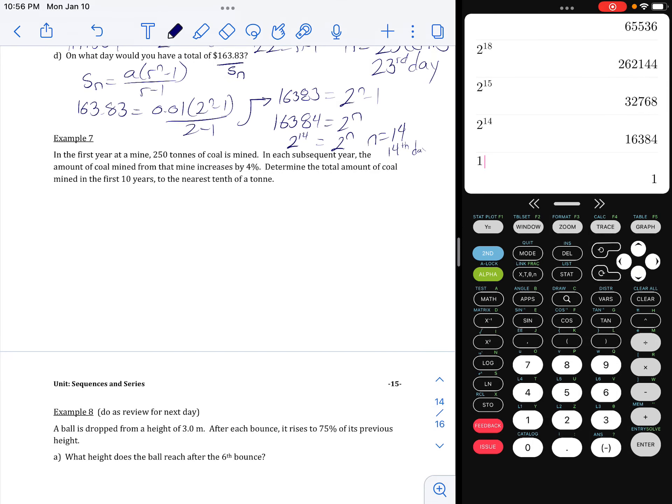In the first year at a mine, 250 tons of coal is mined. In each subsequent year, the amounts of coal mined from that mine increases by 4%. Determine the total amount of coal mined in the first 10 years to the nearest tenth of a ton.